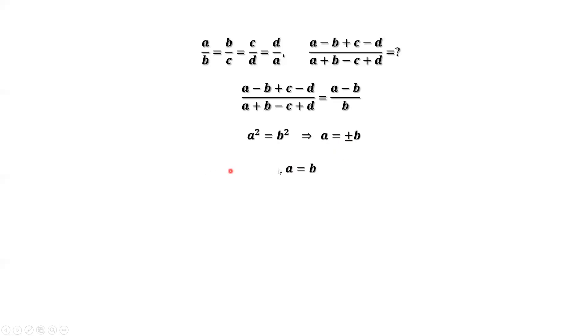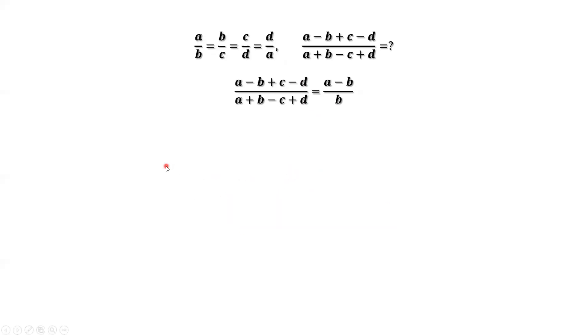If A equals positive B, we replace A by B to get B minus B over B, which equals 0. If A equals negative B, we replace A by negative B to get negative B minus B over B, which equals negative 2.